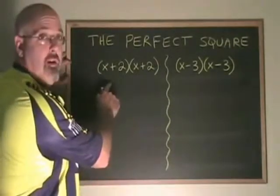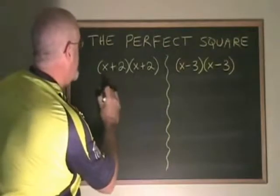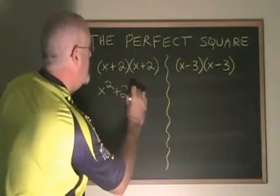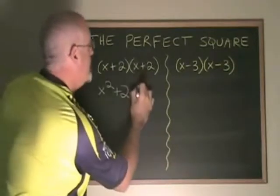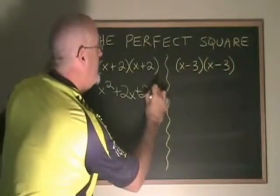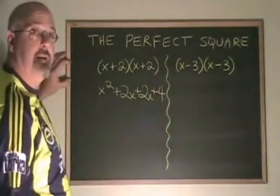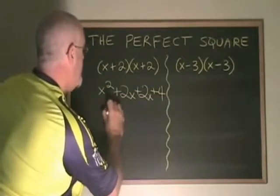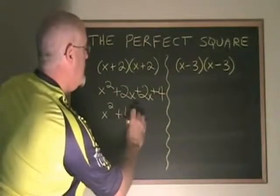Using the FOIL, x times x is x squared, x times 2 is 2x, 2 times x is another 2x, and 2 times 2 is 4. Simplifying, the two middle terms combine, and we have x squared plus 4x plus 4.